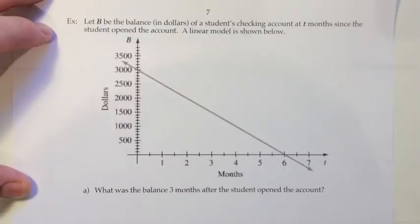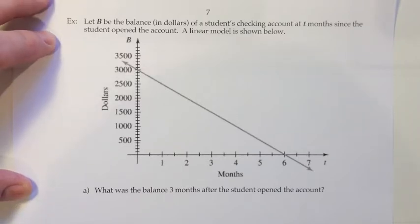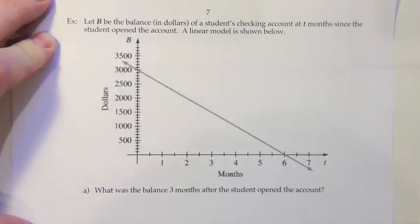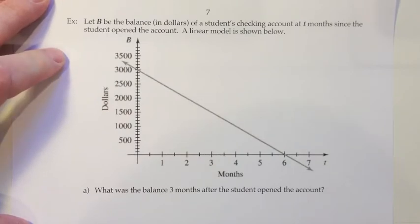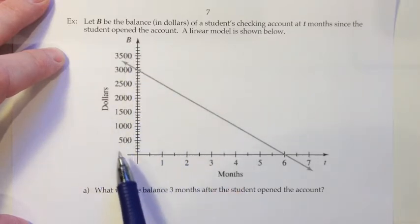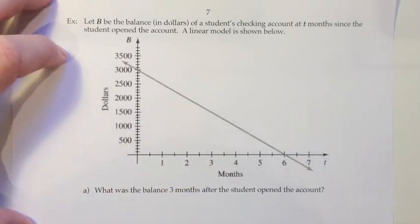We will now move on to a real-life application that uses linear modeling. Let b be the balance in dollars of a student's checking account at t months since the student opened the account. A linear model is shown below. The line itself is what we consider to be the linear model. And that's in the context of a set of horizontal and vertical axes. On the horizontal axis, we've got the variable t, which represents the number of months since the student opened the account. And on the vertical axis, we've got the number of dollars that's in the account.